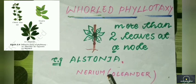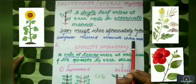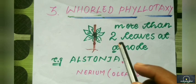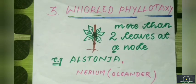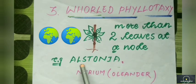Let's summarize each phyllotaxy mnemonic one by one. For alternate phyllotaxy: 'Sun must rise alternately in China' — Sun for sunflower, must for mustard, China for china rose, alternately for alternate. For opposite phyllotaxy: 'Call Guava by Oppo' — Call for Calotropis, Guava for Guava, Oppo for Opposite. Another trick: in DNA, C always lies opposite to G — C for Calotropis, G for Guava. For whorled phyllotaxy, we can read it like 'world,' and world means Elstonia (Alstonia).